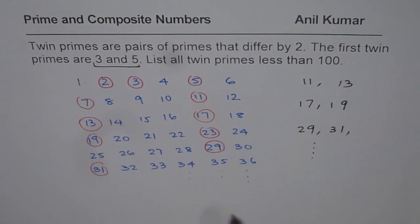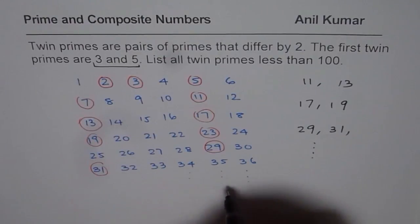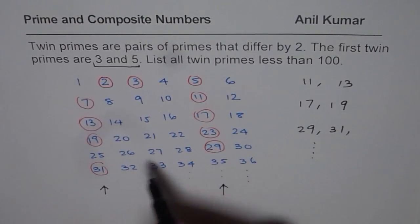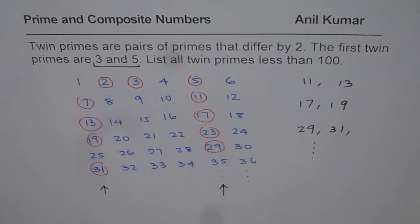So complete this list to get a list of all the twin primes. So what you will observe is that all prime numbers will be in these two columns. So that is how you will find twin primes. I hope that helps. Thank you and all the best.